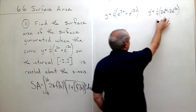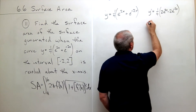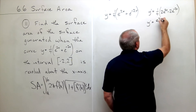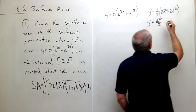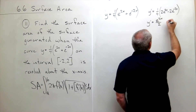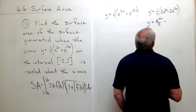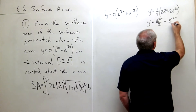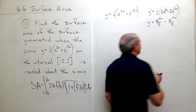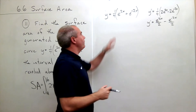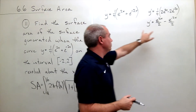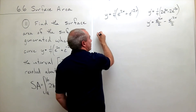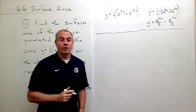Writing this a bit cleaner, y prime equals e to the 2x over 2 minus e to the negative 2x over 2. Now we have our function and our derivative function, and we are ready to plug into our surface area formula.